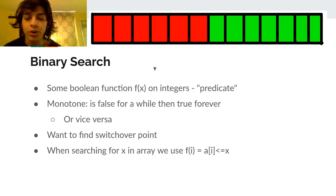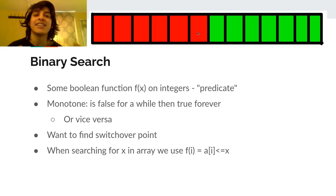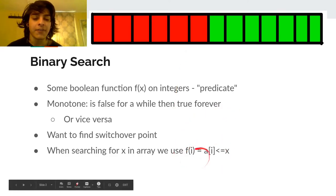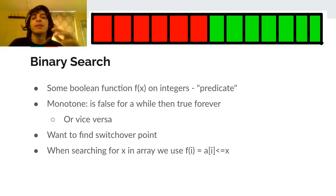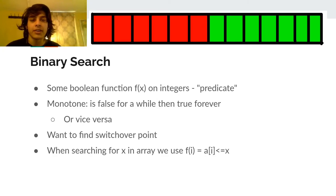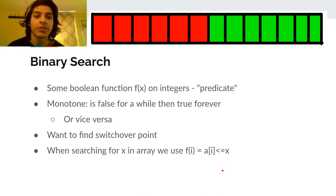So if we have some function like this, the goal of binary search is to efficiently find this switchover point — where it goes from true to false or false to true. For example, consider the classic application of binary searching in a sorted array for a value x. The predicate f(i) = (a[i] <= x) satisfies monotonicity, and the switchover point is where you'll find your target value x if it exists.